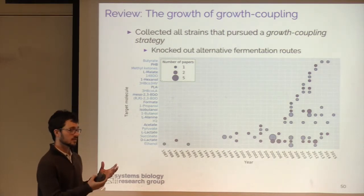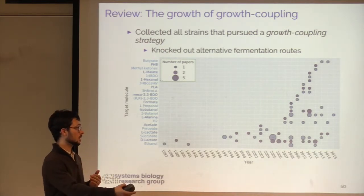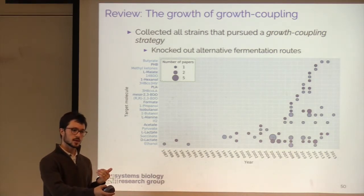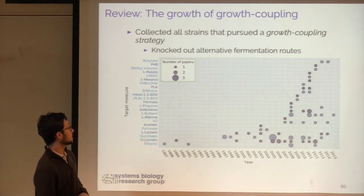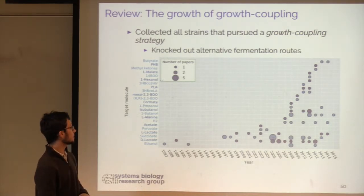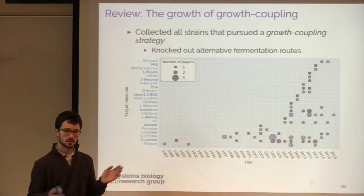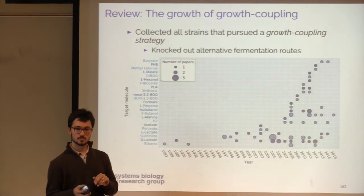If you take the native system, you can growth-couple whatever target you want by putting non-native pathways in the cell and removing the native fermentation routes. For instance, 1,4-BDO is an example of this. There are about 17 to 18 targets that people have been looking at, a pretty diverse set for growth-coupled strains. We can look at those in terms of E. coli metabolism — the non-native targets in blue draw from certain precursor molecules, with a lot drawing from the acetyl-CoA node. For example, 1,4-butanediol is produced from succinate and alpha-ketoglutarate.